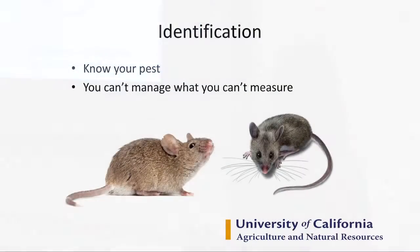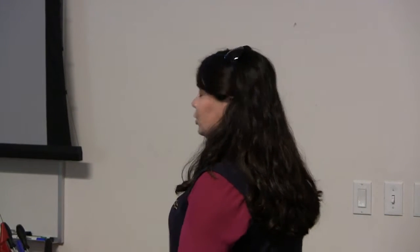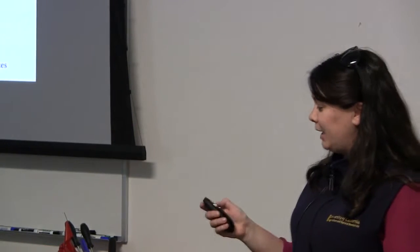You can't manage what you can't measure. You need to know if it's a mole or a gopher — a gopher trap won't catch a mole. Is it a house mouse or a deer mouse? Not all rodenticide labels cover deer mice. Do you have a roof rat or a Norway rat? They have different biology — roof rats spend time up high, Norway rats down low — which affects where you place traps.